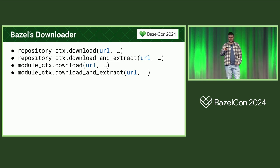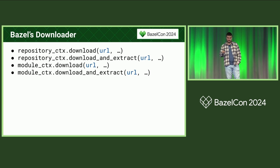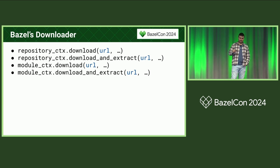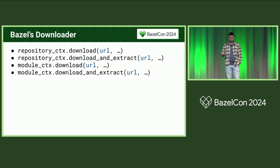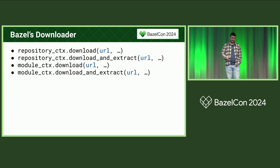The Bazel downloader is hooked up to some native Bazel internals, but you can also call it from Starlark if you are in a repository rule or in a module extension. You can either download files or you can download plus extract in one step.